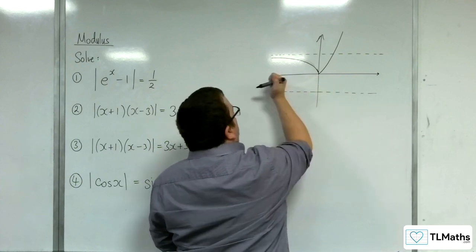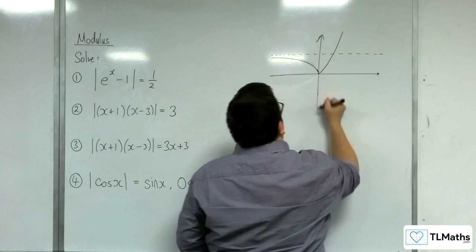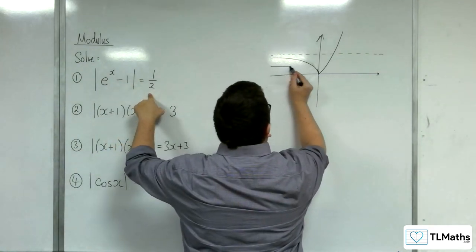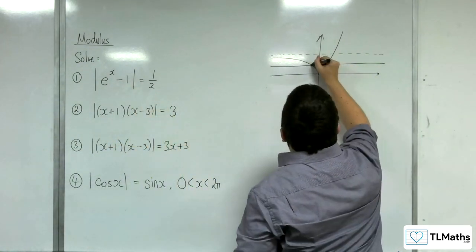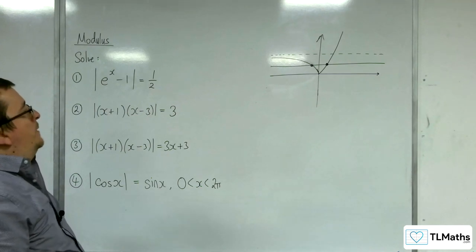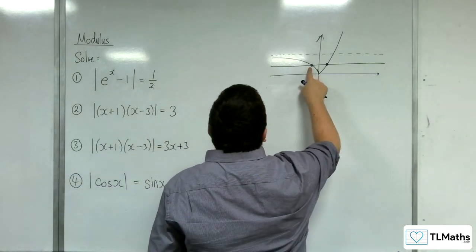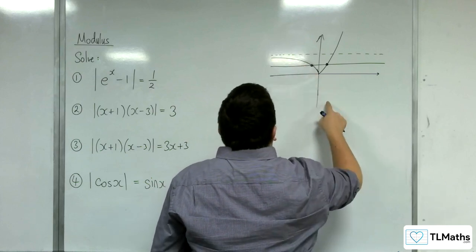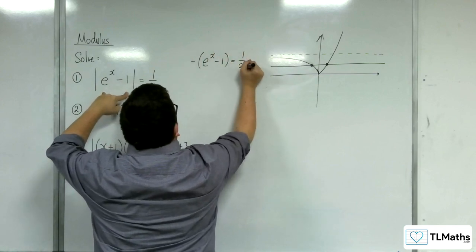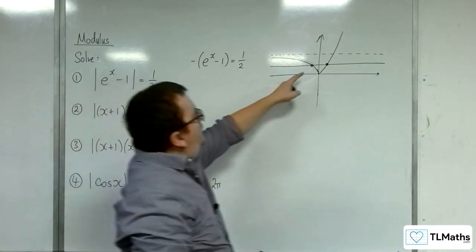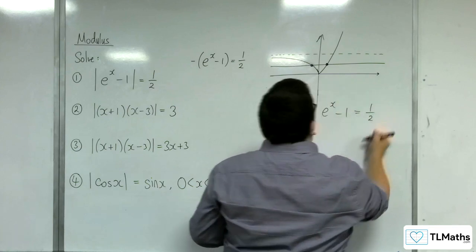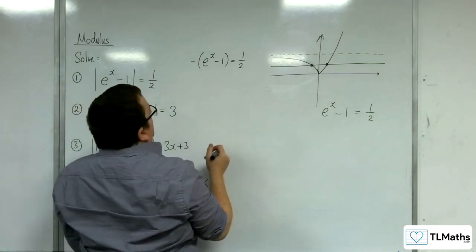So we can get rid of that part of the graph now — that's my curve. Then I've got y equals 1 half, which would be a horizontal line intersecting the curve at two distinct points. This solution here is coming from the negative modulus: minus e to the x take away 1 is equal to 1 half. This other solution is going to be coming from the positive part of the curve: e to the x minus 1 is equal to 1 half. So we need to solve both of these equations.